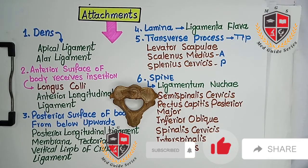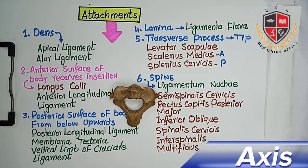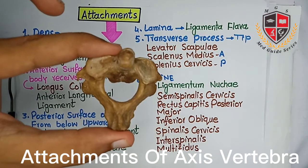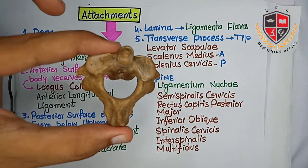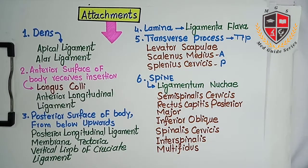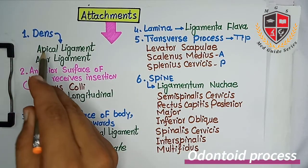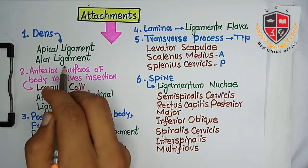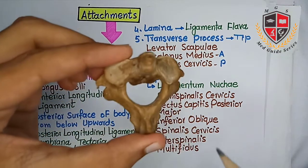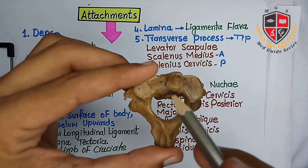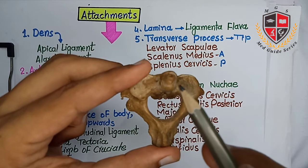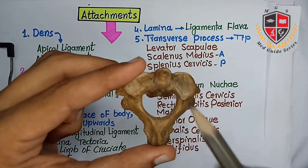Now, the attachments of axis vertebra. This is the axis vertebra. The dens provides attachment to the apical ligament and alar ligament. This is the dens or odontoid process. It gives attachment to the apical ligament and alar ligament.